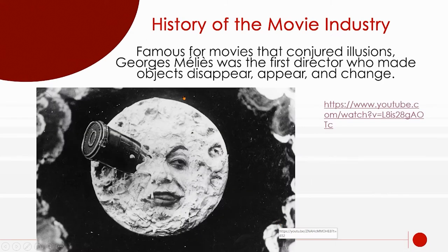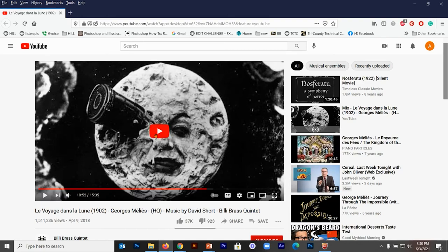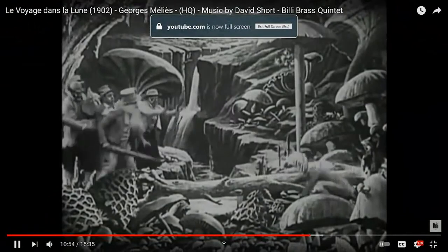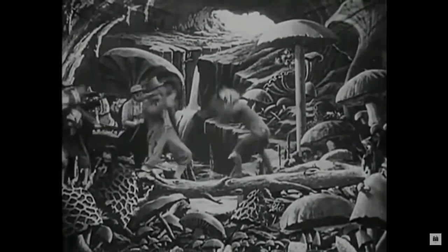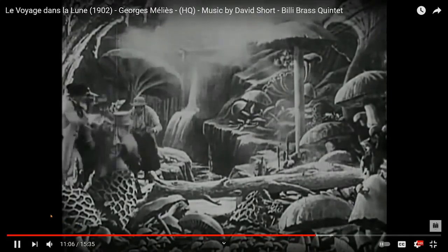One of the first main filmmakers was Georges Méliès. He had the first idea for double exposure, split screen, and the first dissolve. He had many ideas we still use today. His first movie, 'A Trip to the Moon,' showed people disappearing — he would turn the camera off, make the person move away, and turn the camera back on. That was revolutionary; he did the first dissolve in 1899.